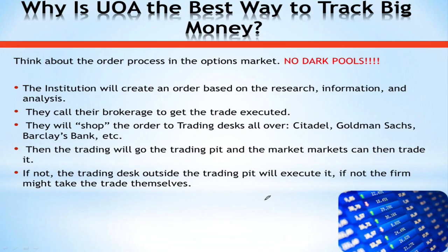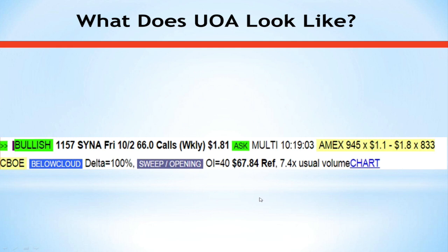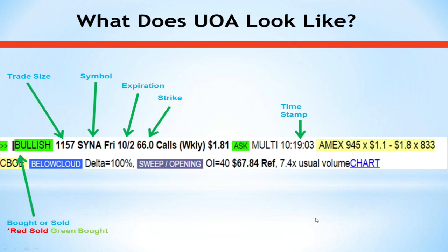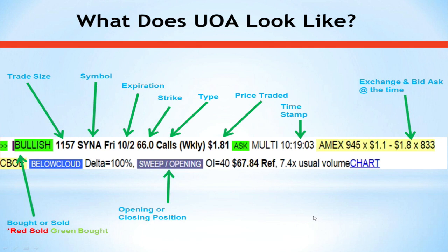We're able to get a wealth of information about a big block of options that comes across the tape. Looking at an example in SYNA — this is what it looks like using a scanner, though you can get this information from pretty much any retail trading platform. The exchange must give you: when the trade took place, whether it was bought or sold, the size, the symbol, expiration, strike price, whether it was a call or put, the price it traded, the market at the time of the trade, whether it was an opening or closing position, and where the stock was trading when the options trade took place.